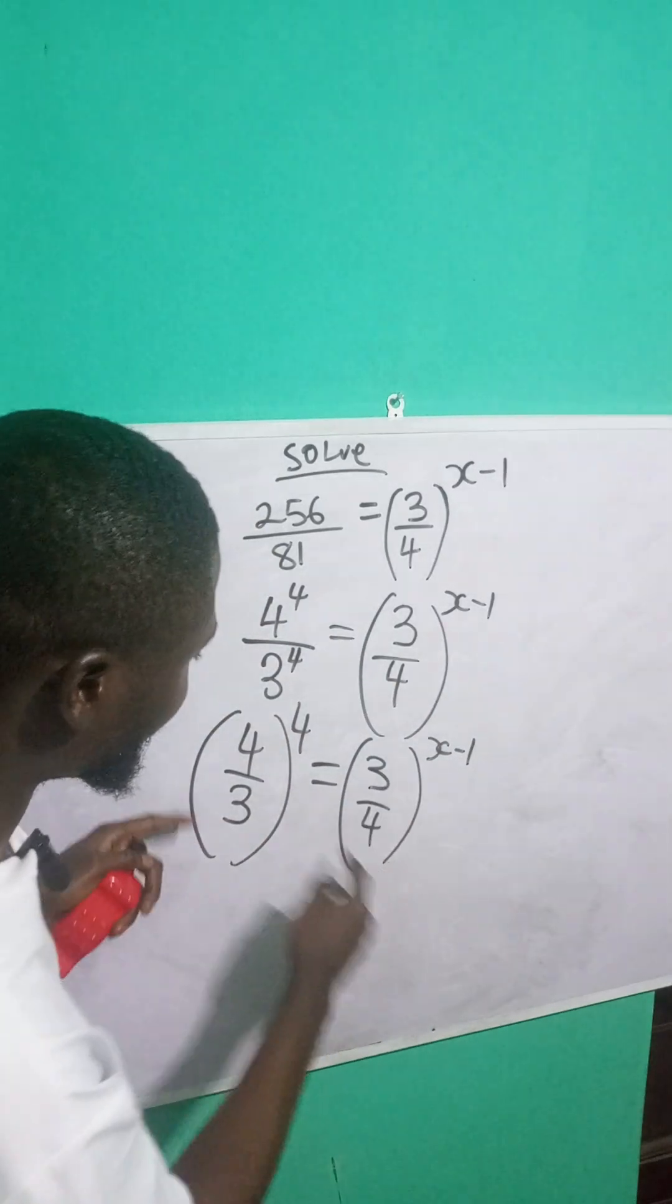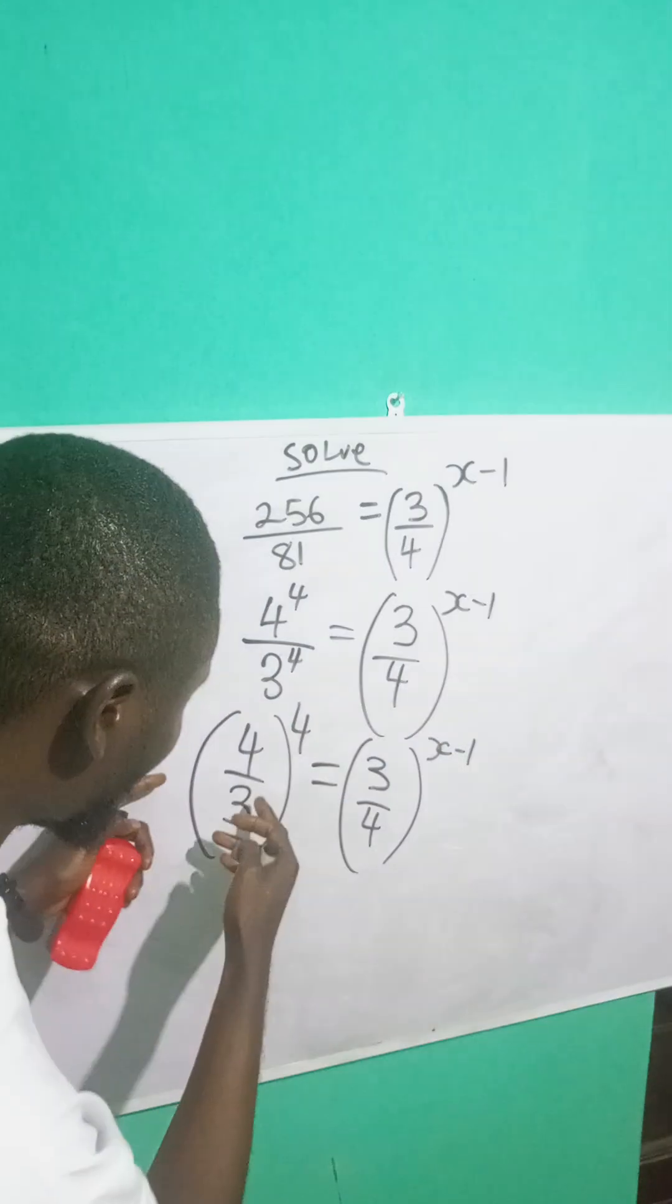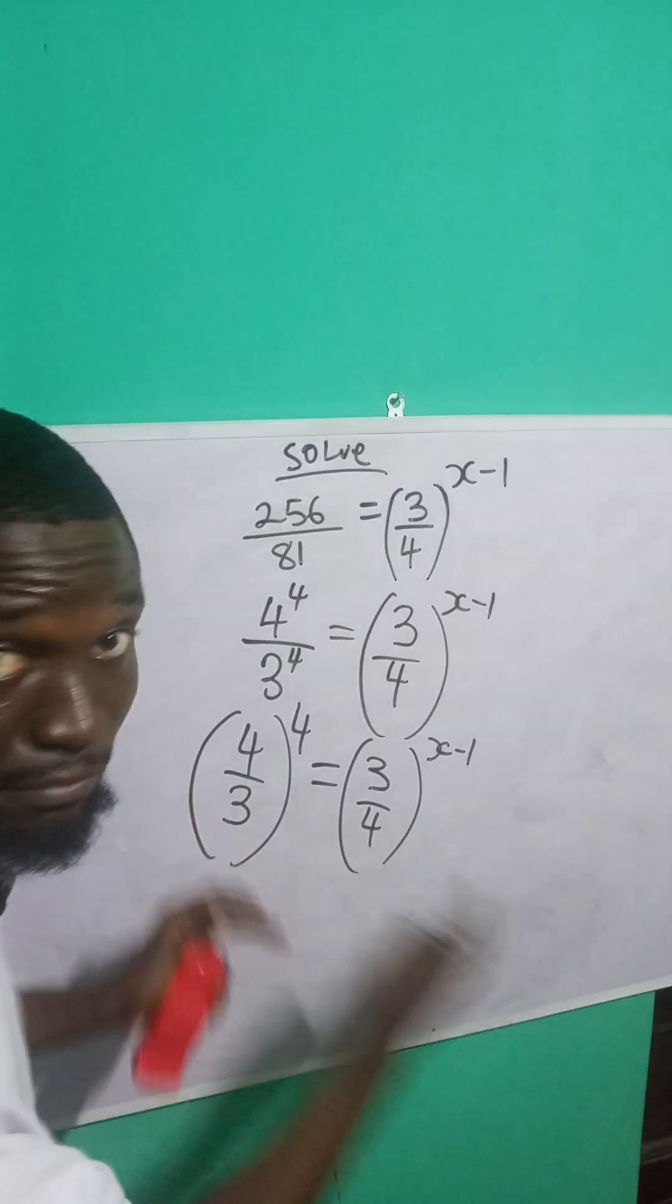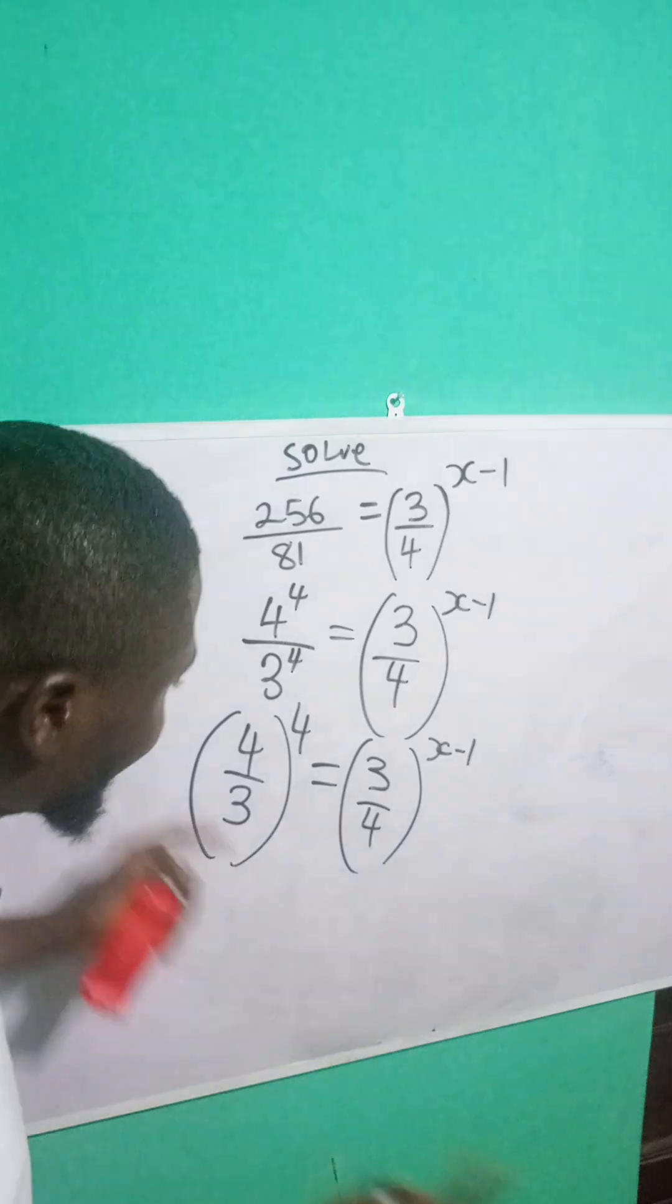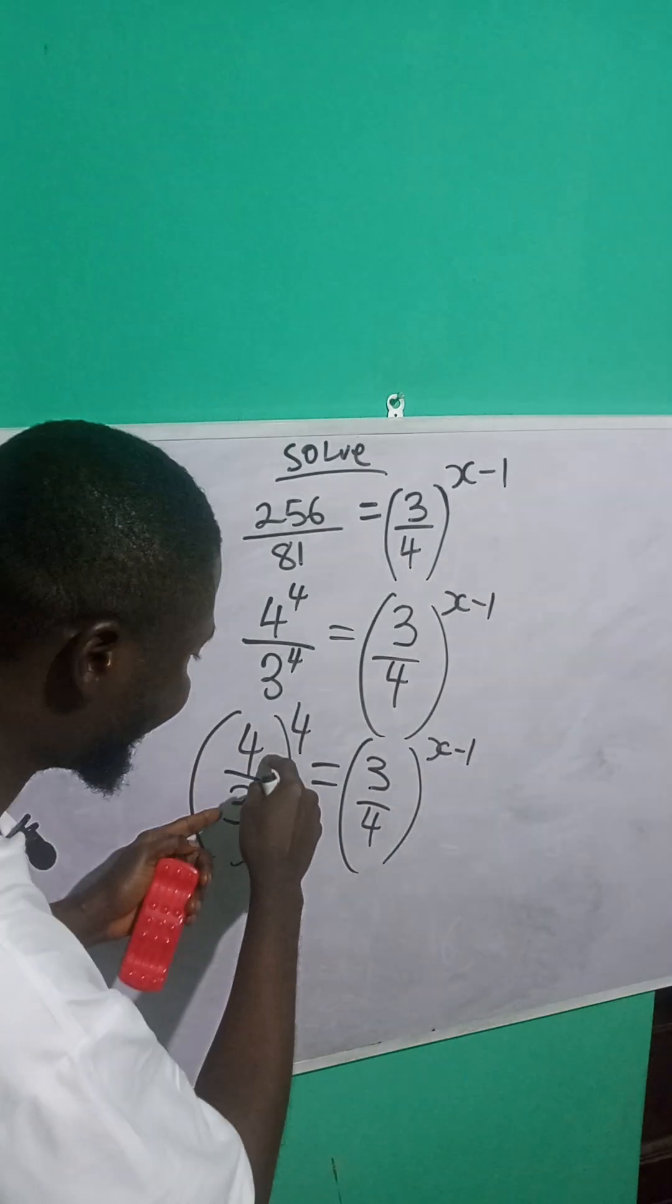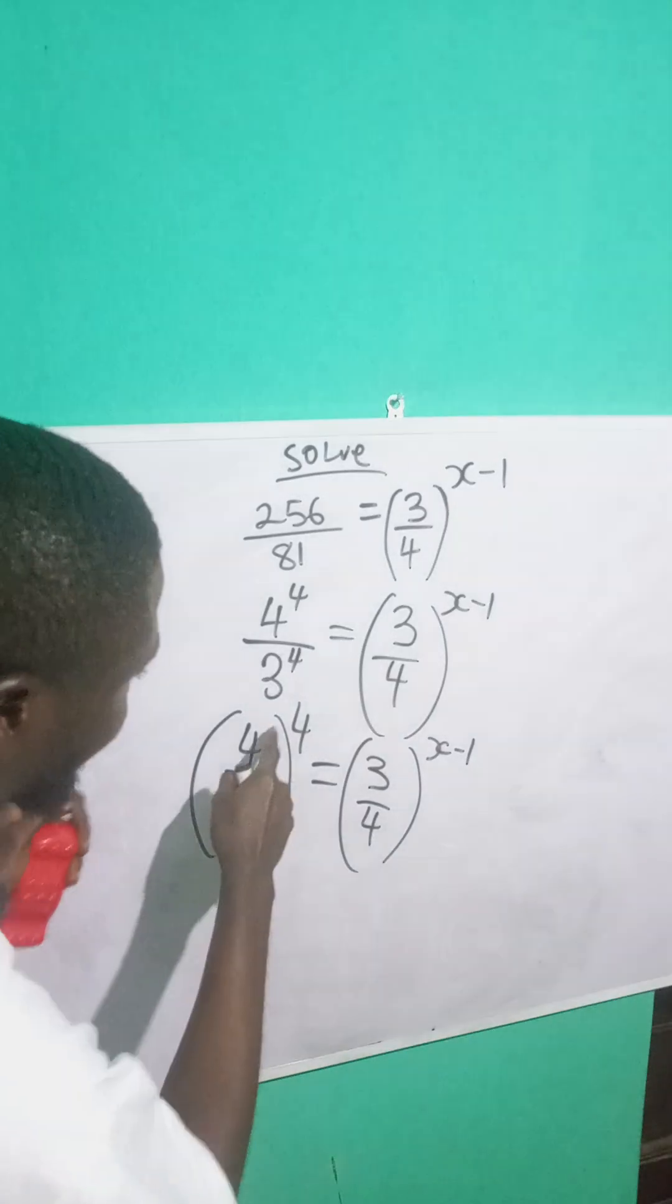Now notice that I have 3 over 4 here, but I have 4 over 3, and I want to have 3 over 4 on this side so that I can have the same base, so that I can be able to equate the powers. If I want to do that, I can take the inverse of this. And when I take the inverse of this, I will introduce a negative sign here.